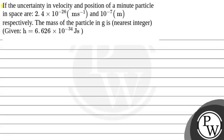Hello children, let's read this question. If the uncertainty in velocity and position of minute particles in space are 2.4 multiplied 10 raised to the power minus 26 meter per second and 10 raised to the power minus 7 meter respectively, the mass of particle in gram is — nearest integer. Planck's constant ka value given hai, represented by H.